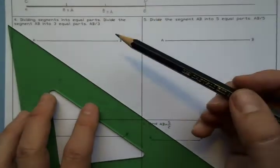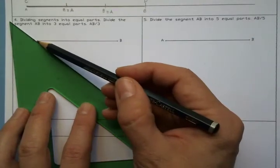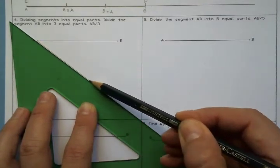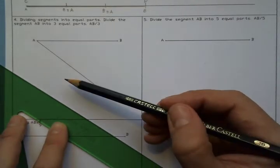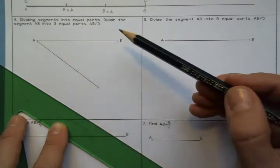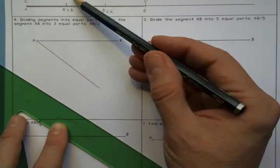First, you have to draw a ray from A. For example, it doesn't matter the angle, it doesn't matter if it is from A, from B, going up, or going down.